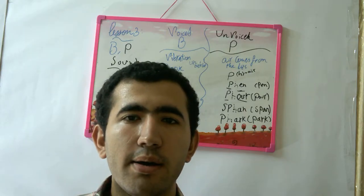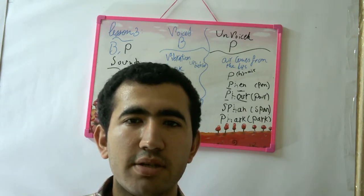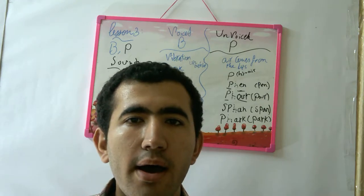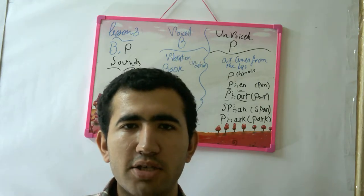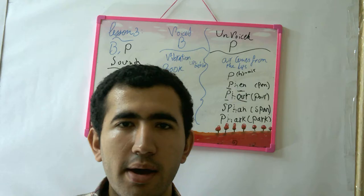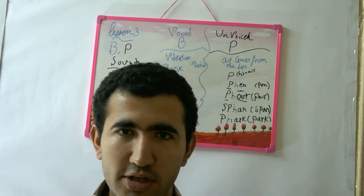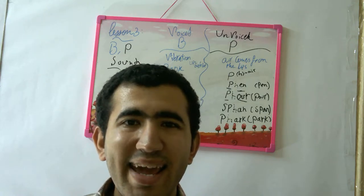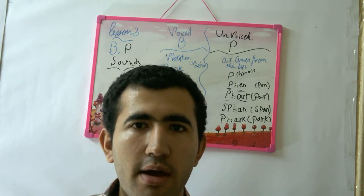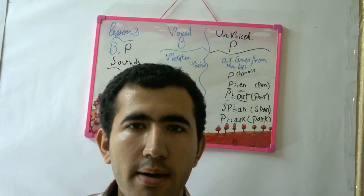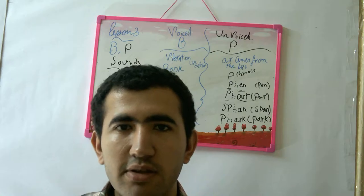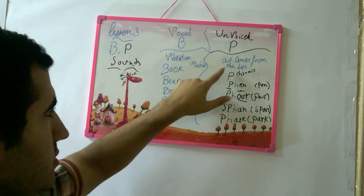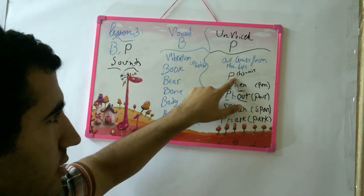But P — there's no vibration. It's just air that comes from your mouth. P, P. Imagine you say P as in P and itch — so when you put P and itch together, you make the air come out of your mouth. P, P. Imagine there's an itch, like this one.